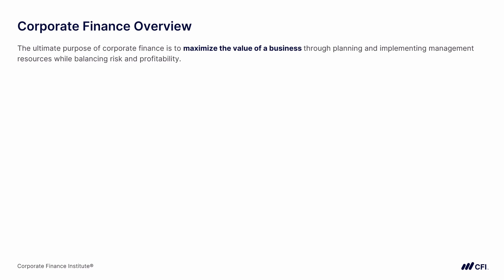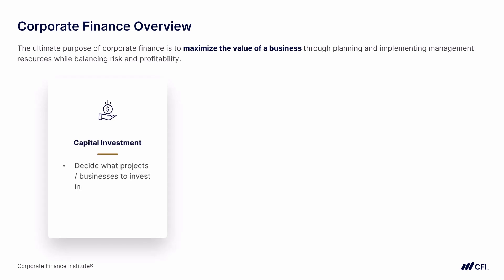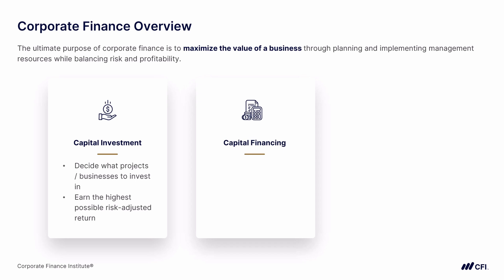This course is divided into three sections. For the first section, capital investment, we will look at deciding what projects or businesses to invest in — we're always looking to earn the highest possible risk-adjusted return. In the second section, we'll look at capital financing, where we'll determine exactly how to fund the capital investments we've selected. We're always looking to optimize the firm's capital structure by minimizing the weighted average cost of capital, or WACC.